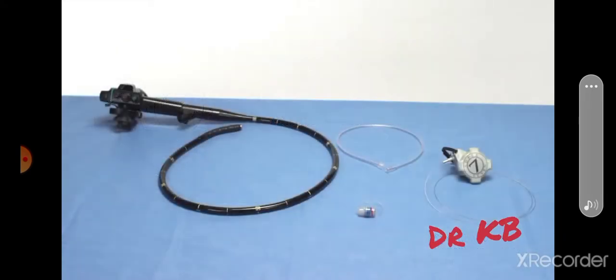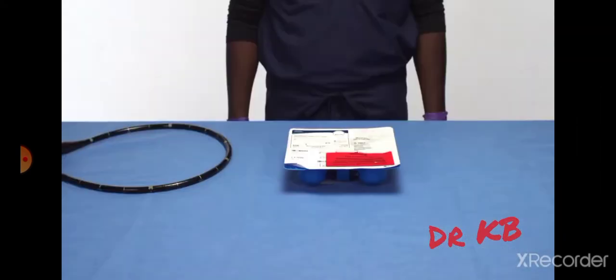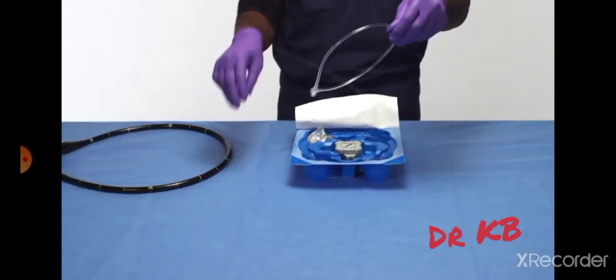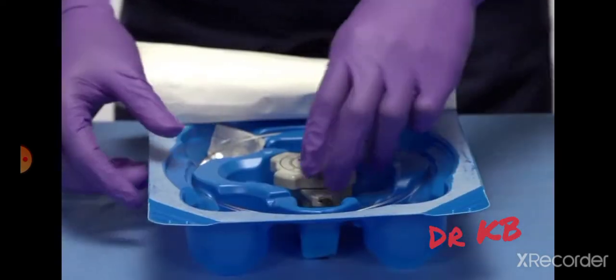The first step will be to attach the handle unit to the endoscope. Remove the device from the package. Pull back the cover and remove the plastic irrigation tubing and the handle unit and tripwire.